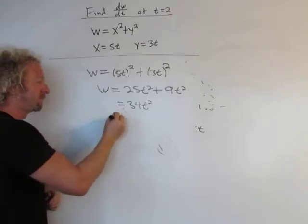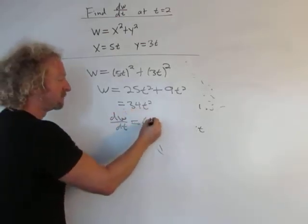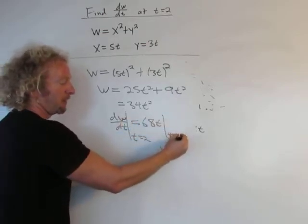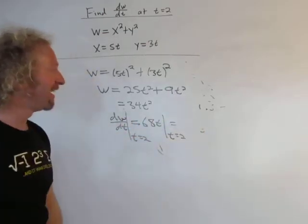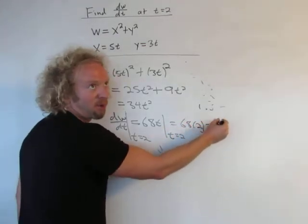Then dw dt, 68t, evaluated at t equals 2, going kind of fast, kind of in a hurry. So you get the same thing, plug in 2, and then you get 136.